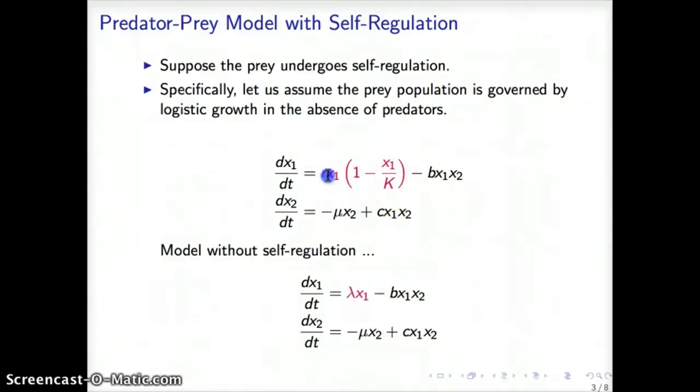Now that term takes the form that is in red here, in which there is still a linear term, Rx₁, but now there is a negative term minus Rx₁ squared divided by K. Here in this expression, K is called the carrying capacity. You may think of the carrying capacity as some maximum number of individuals that population may sustain.